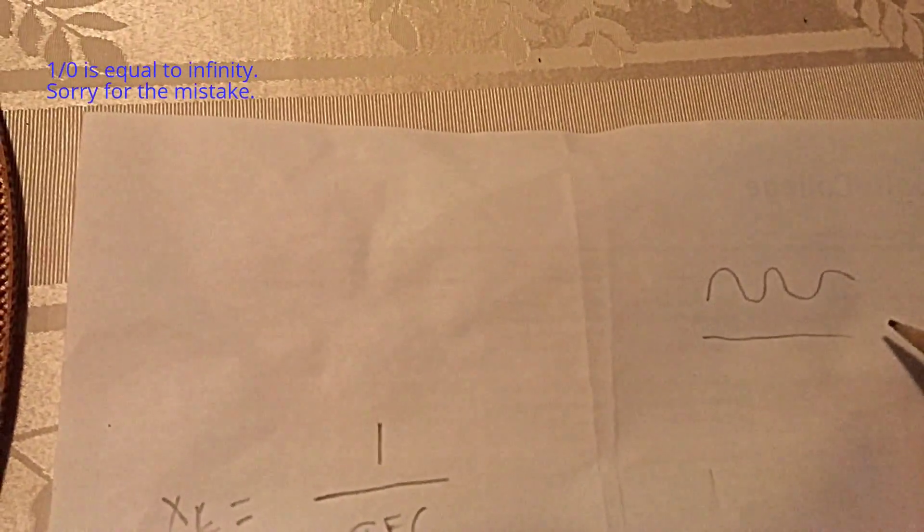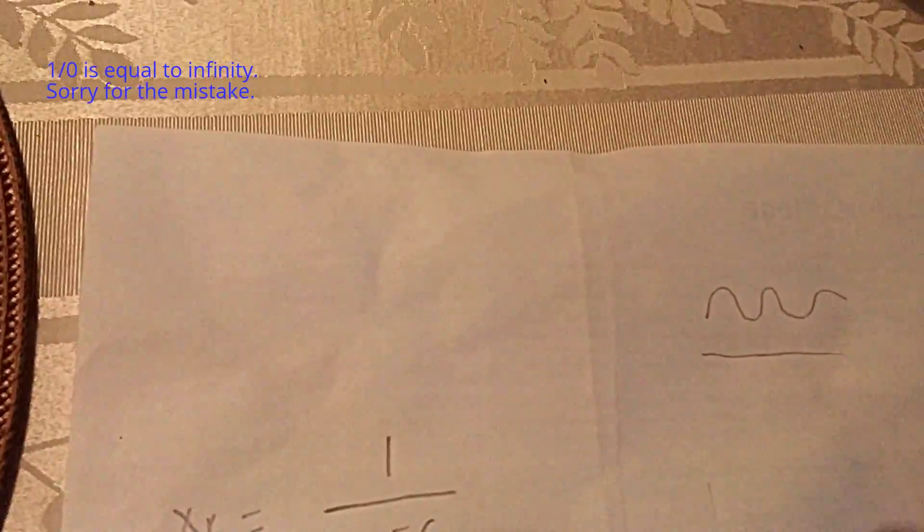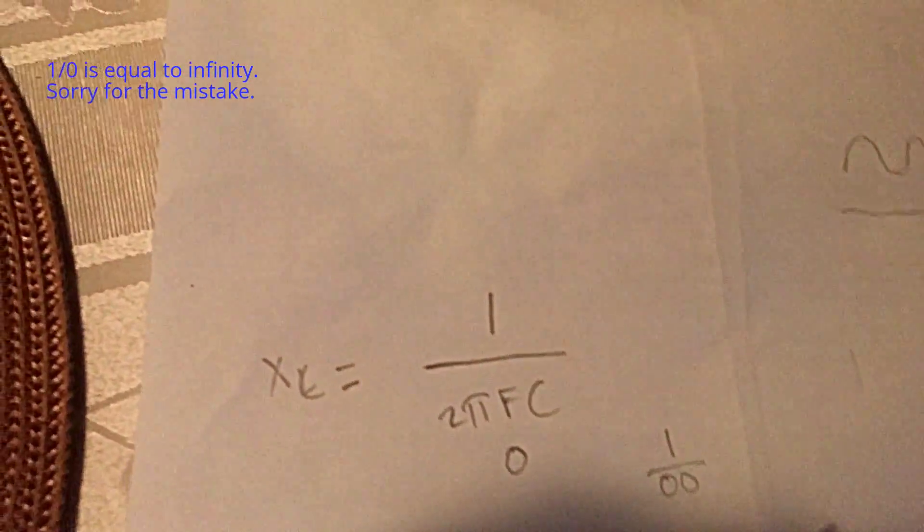Keep that in mind, zero, nothing. Put a zero in this formula right here. If you have a zero here, what happens? One over zero, infinite. You should know that one over zero is equal to infinity.